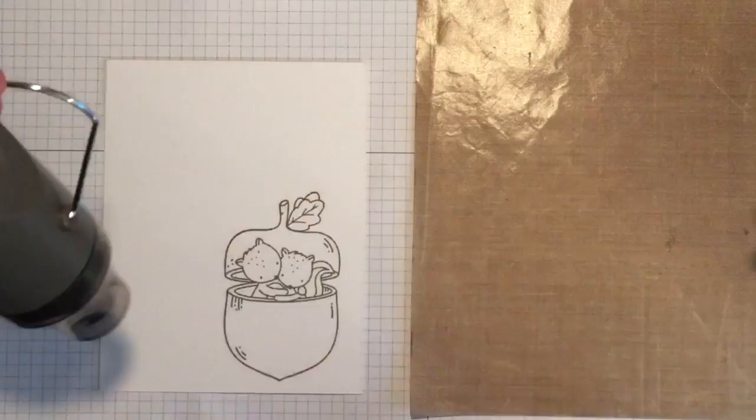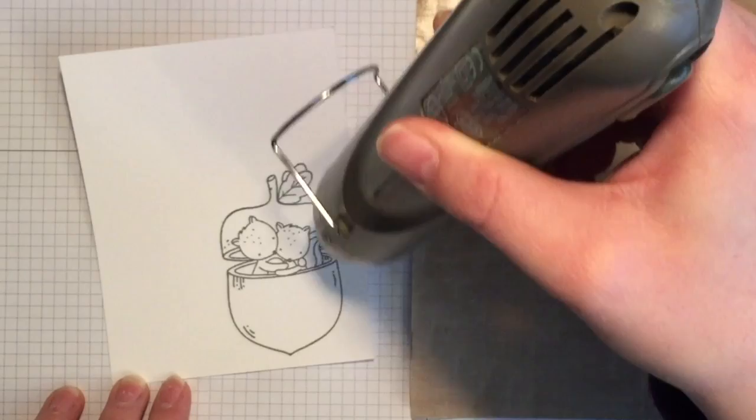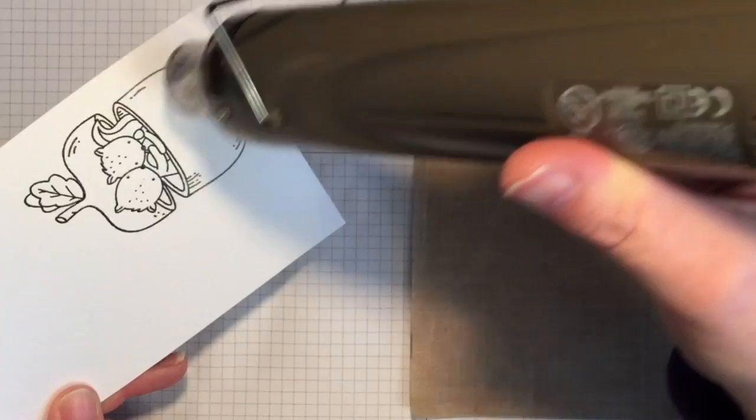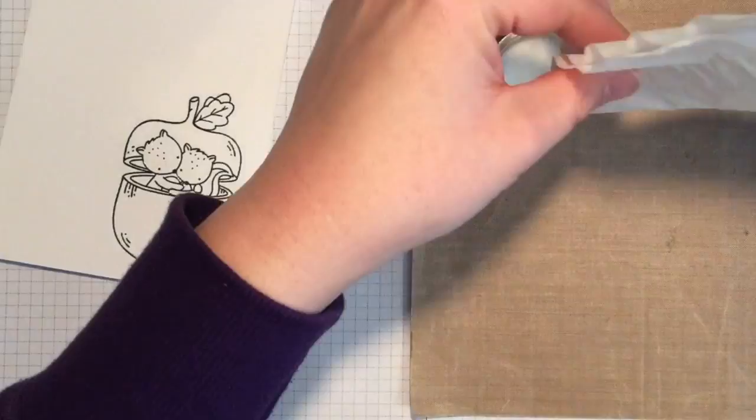By heat setting it, it will enable me to watercolor easier because the watercolor won't go everywhere—it'll stay within the lines of the image. It also gives it a nice raised look and a nice solid black color because it's clear embossing.